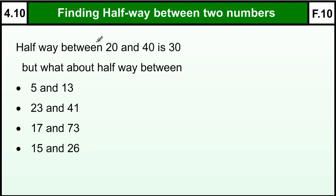Finding halfway between two numbers. Half way between 20 and 40 is 30. That's quite easy to do. What happens if you've got something that's not so easy, so 5 and 13.